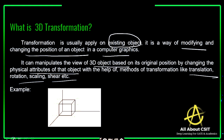If you look at the image in the picture, this is a 3D object. You can see the front view, top view, side view, and back view. An object present on a 3D plane is a 3D object. 3D objects have X, Y, Z coordinates — these are all the different X, Y, Z coordinates.